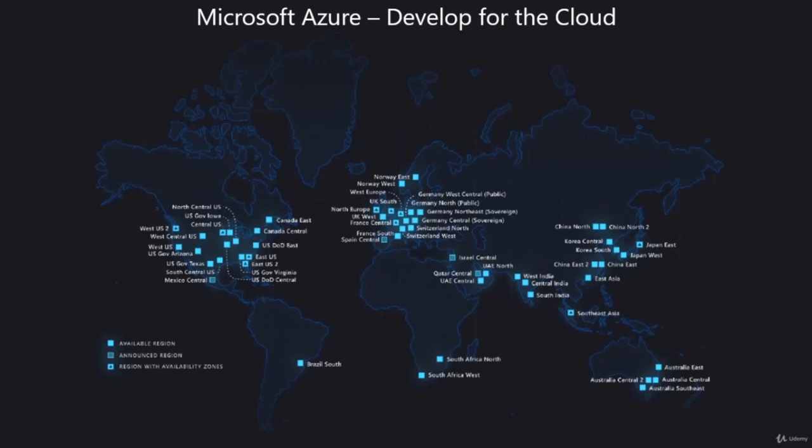Microsoft Azure cloud has a global footprint, and that's why when you're developing for this cloud you have plenty of options to choose from. Across the globe we have 58 regions available, and while developing your application, storages, databases and all, you can choose wherever you want to host your resources.